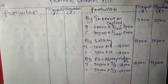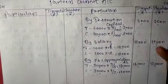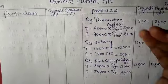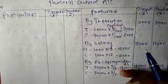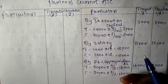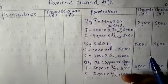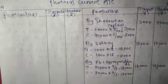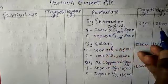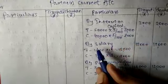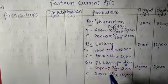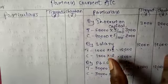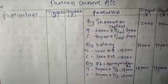All these — interest on capital, salary, and share in profit — are adjustments entered on the credit side of the partner's current account, because these are expenses for the firm. These are amounts the firm has to pay to the partners.